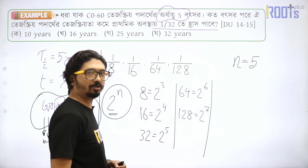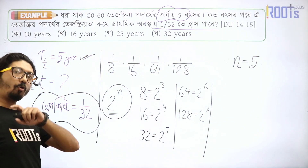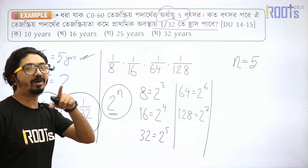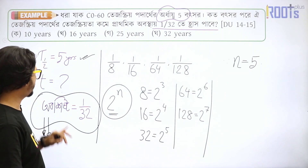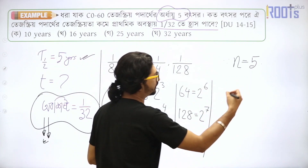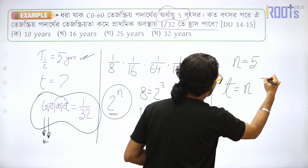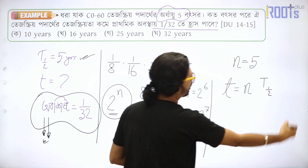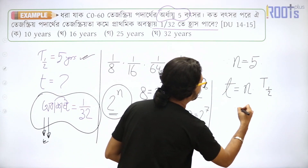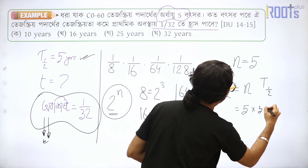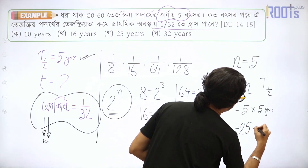So if n equals 5 — meaning the remaining fraction is 1/32 — we use the formula: t equals n into t-half. So t equals 5 into 5 years, which means t equals 25 years.